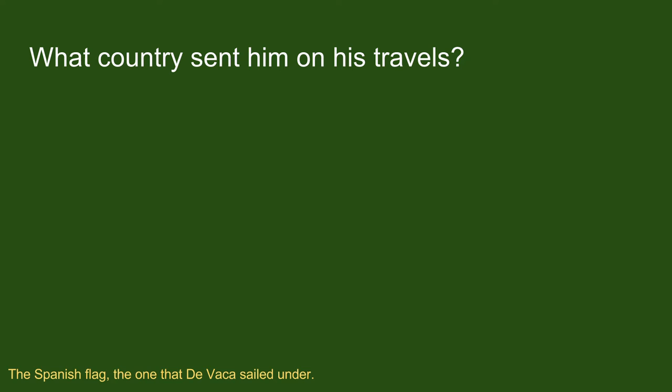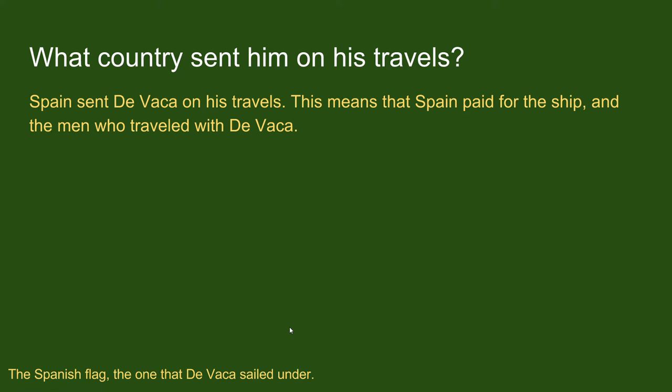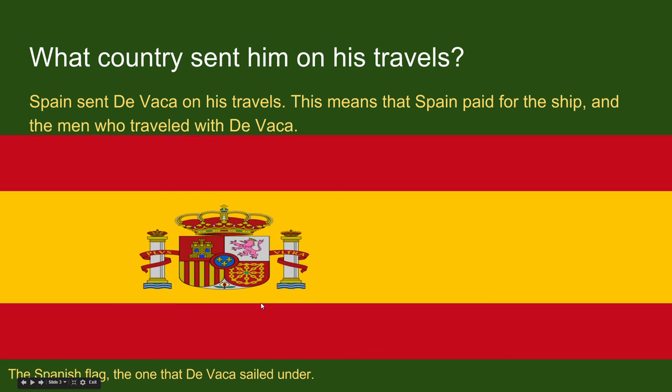What country sent him on his travels? The Spanish flag is the one that Cabeza de Vaca sailed under, and his origins are also from Spain. He went to the Spanish king or queen and asked to fund his voyage. The Spanish crown decided to pay for a ship and the voyage, so all the land he claimed would be for Spain.